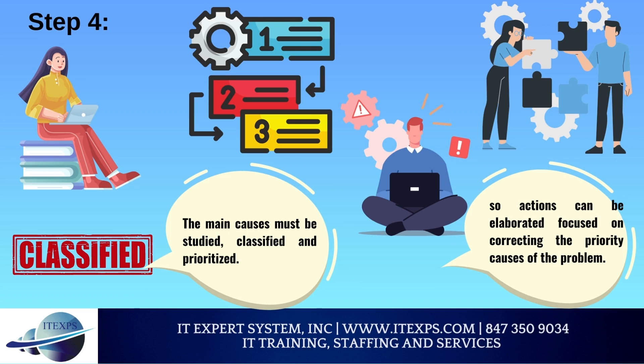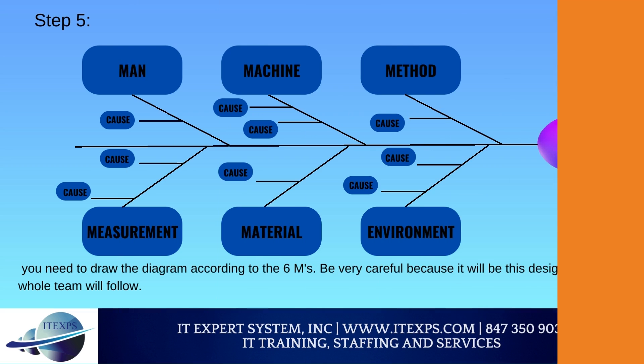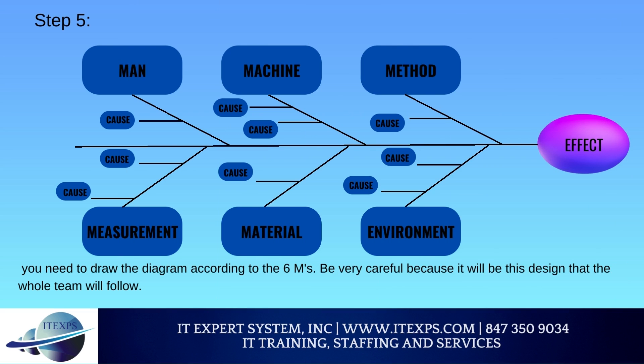Step 4: The main causes must be studied, classified, and prioritized, so actions can be elaborated focused on correcting the priority causes of the problem. Step 5: We have reached the last step — in it you need to draw the diagram according to the 6M. Be very careful because it will be this design that the whole team will follow.